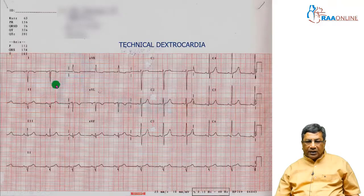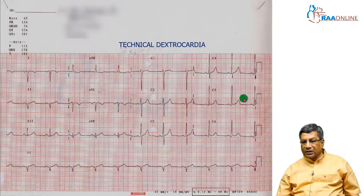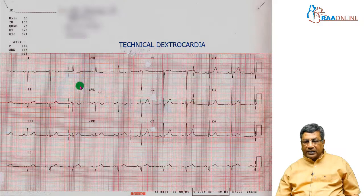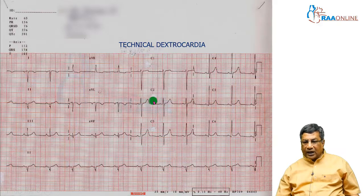Look at this ECG. Here the P wave is inverted in lead I and upright in AVR, but the QRS is progressing normally over the left-sided leads. That means the left heart is on the left side. It is appearing like dextrocardia because of limb lead reversal by the technician — this is called technical dextrocardia. In true dextrocardia, the R wave progresses on the right side. In technical dextrocardia, R wave progresses normally on the left side.